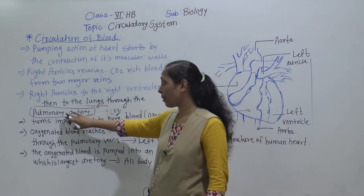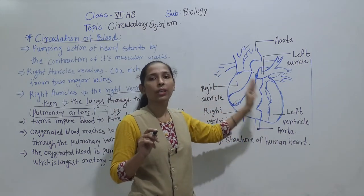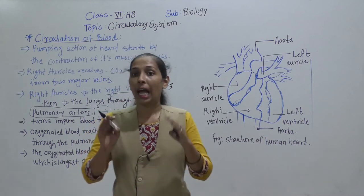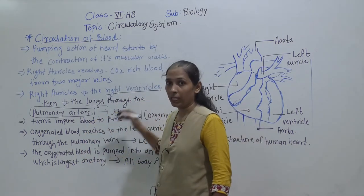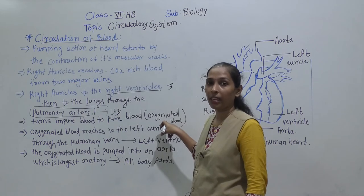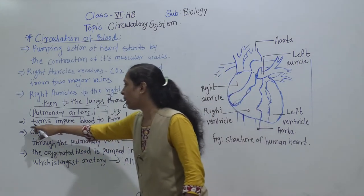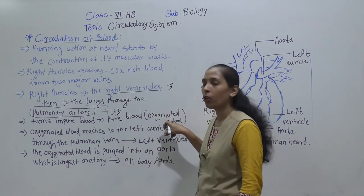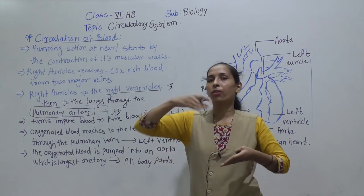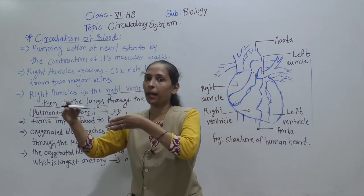Blood enters the lungs from the right ventricle via the pulmonary artery. In the lungs, the exchange of gases happens: the CO2-rich deoxygenated blood gets converted into oxygenated blood. In other words, impure blood becomes pure blood in the lungs.